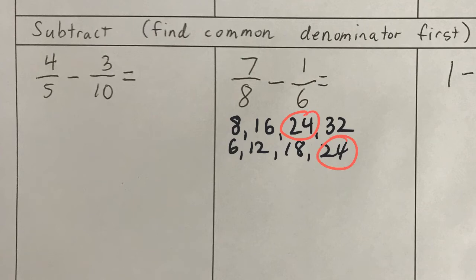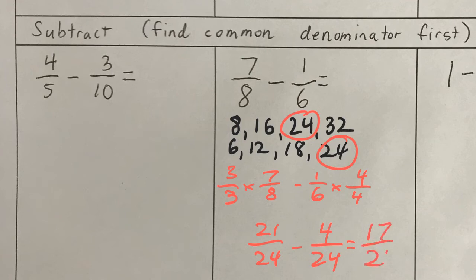So, 24ths minus 24ths is how we need to do this. How do we get 7 eighths into 24ths? Well, 8 times what equals 24? 3. So, 7 times 3, 21. And how about 1 sixth? We need to get that to 24ths. So, 6 times what will give us 24? It's going to be 4. So, 4 fourths. And now we're all set to subtract that. 21 minus 4 will give me 17. And that's the answer.